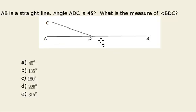Line segment AB is a straight line. Angle ADC is 45 degrees. We want to know what the measure of angle BDC is.